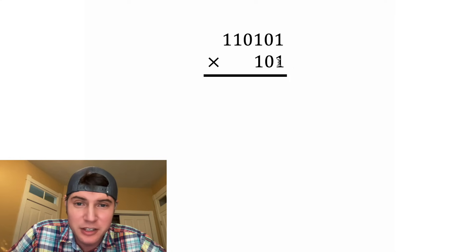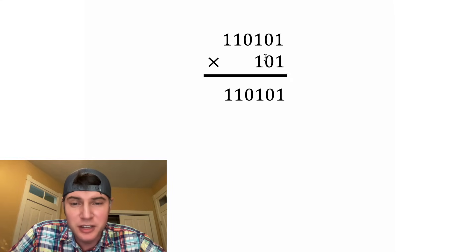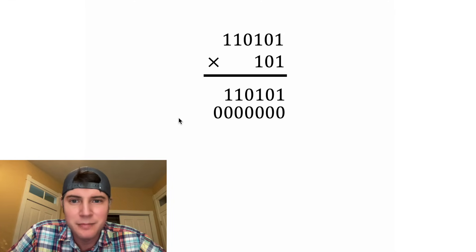First, we look at this 1, and we're going to multiply it by everything up here. 1 times this is just going to be that thing, rewritten. Now for this term, we're going to put in a 0 placeholder, and then we're going to multiply 0 by everything, which is just a bunch of 0s.